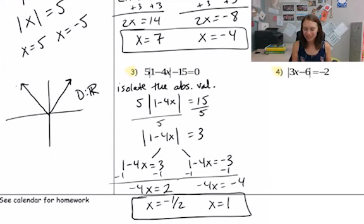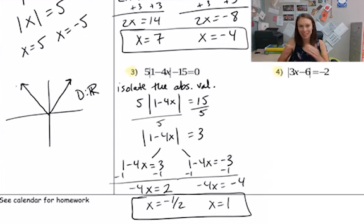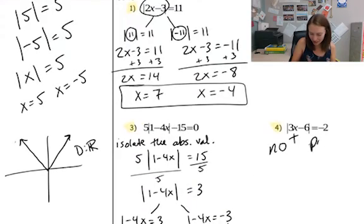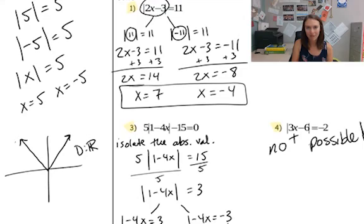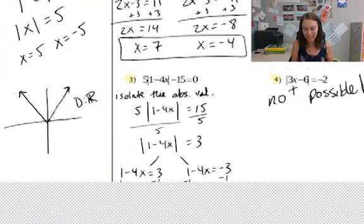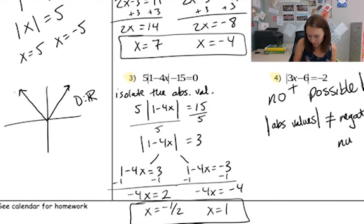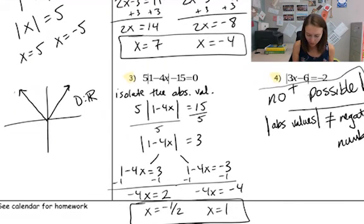Now, one more example — this one's a little tricky. The absolute value of (3x − 6) equals negative 2. This one is going to throw a curveball at you, because if you break it into two equations and solve, you will be wrong. You actually are wrong if you do anything with this equation — this is not possible. You can't have an absolute value equal a negative number. The whole point of absolute value is to make things positive, so absolute values cannot equal negative numbers. It defeats the whole purpose of the definition of an absolute value. You can say no real solutions, or not possible.